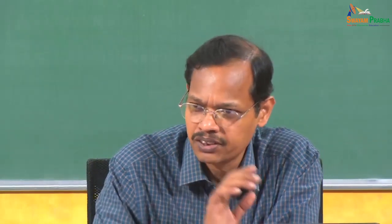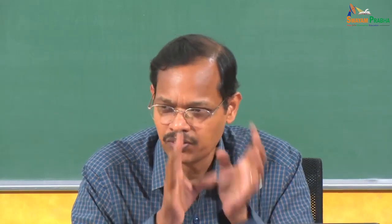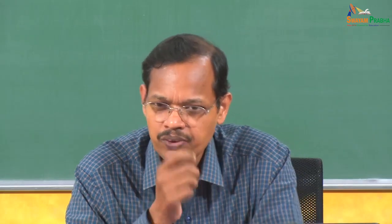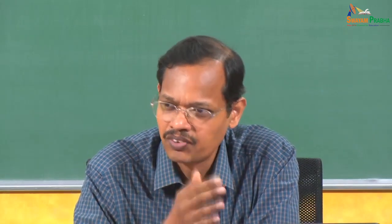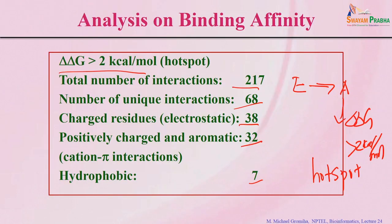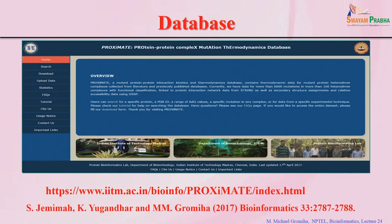To get more information on these types of interactions, we developed a database called the ProXimate database. This gives the binding affinity of different mutants — currently more than 6000 mutants — and the information in this database helps understand which types of interactions are important at different locations in the interface, generalizing across interaction types and specific pairs.